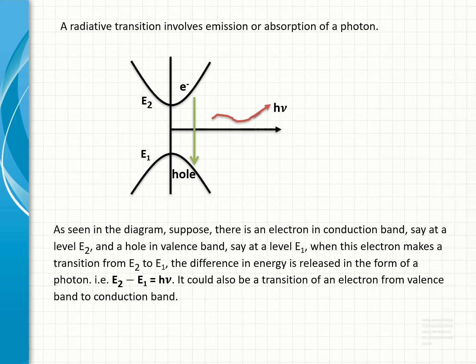E2 minus E1 equals h nu. It could also be a transition of an electron from valence band to conduction band.